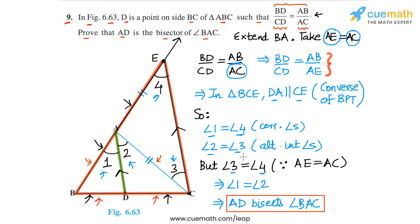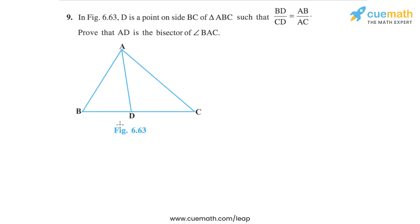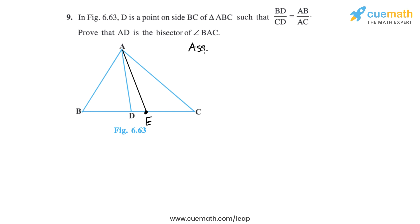Now I'm going to show you a second proof of the same result. Let's again start with the original figure given to us. We have to show that AD is the bisector of angle BAC. So let's assume that the actual bisector is a line AE — from A we draw segment AE and assume it is the bisector of angle BAC, then we will show that AE and AD are actually the same.